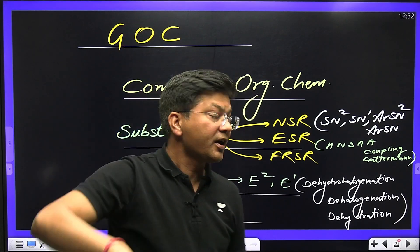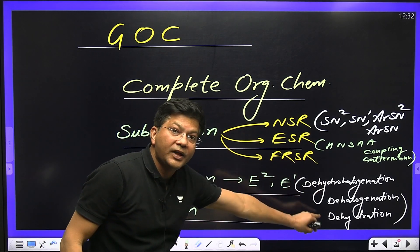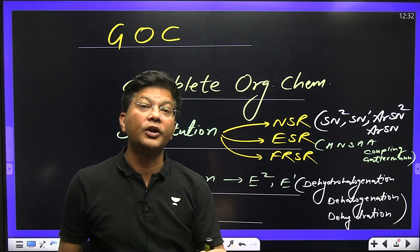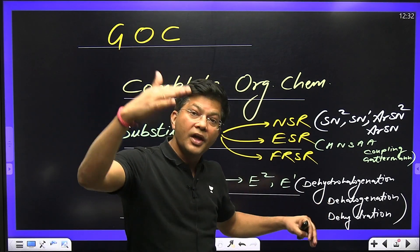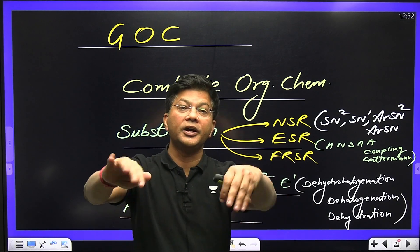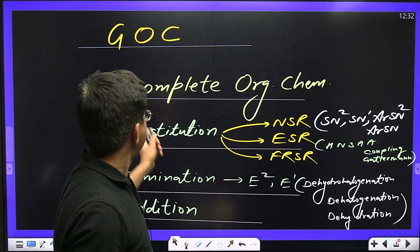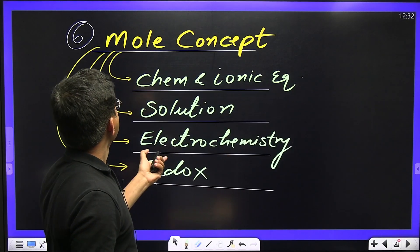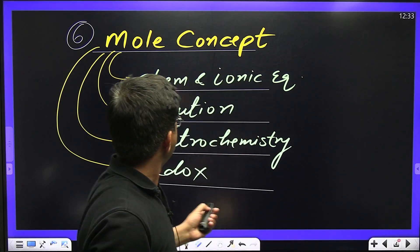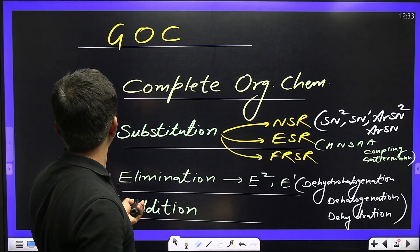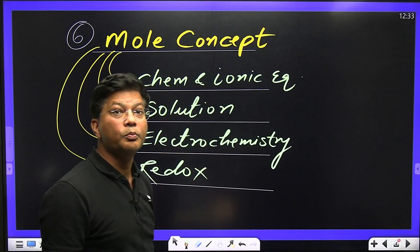Now addition reactions are just the opposite of elimination. Where there is dehydrohalogenation, there is hydrohalogenation; where there is dehalogenation, there is halogenation; where there is dehydration, there is hydration. So that's 6 chapters covered, and the 5th one was GOC application.